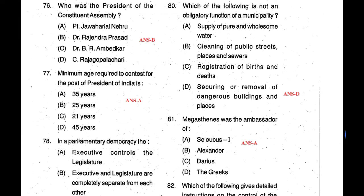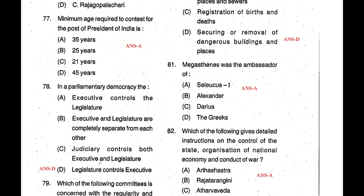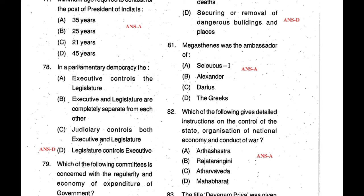Question 77: Minimum age required to contest for the post of President in India is 35 years. For Lok Sabha or MLA the minimum is 25; for Rajya Sabha or State Legislative Council the minimum is 30. So for President the minimum age is 35 years — correct answer is A. Question 78: In parliamentary democracy the legislature controls the executive because all bills, including money bills, are passed by the legislature, then sent to the President for approval, after which a bill becomes an act — answer is D.